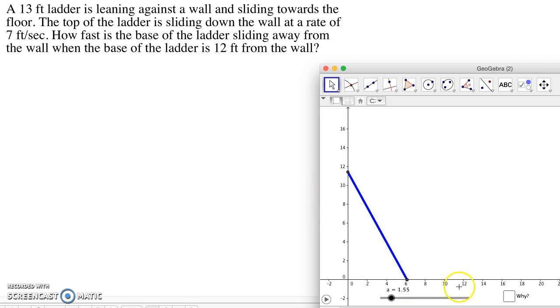Alright, so when the base gets to 12 feet, that's the point that we're interested in. We want to know how fast is the base moving away from the wall. So a little bit of intuition here we can kind of apply to this problem and think, well, if the top is moving down at a fixed rate of 7 feet per second, you might initially think that the base is going to continue to move away at a fixed rate of 7 feet per second.